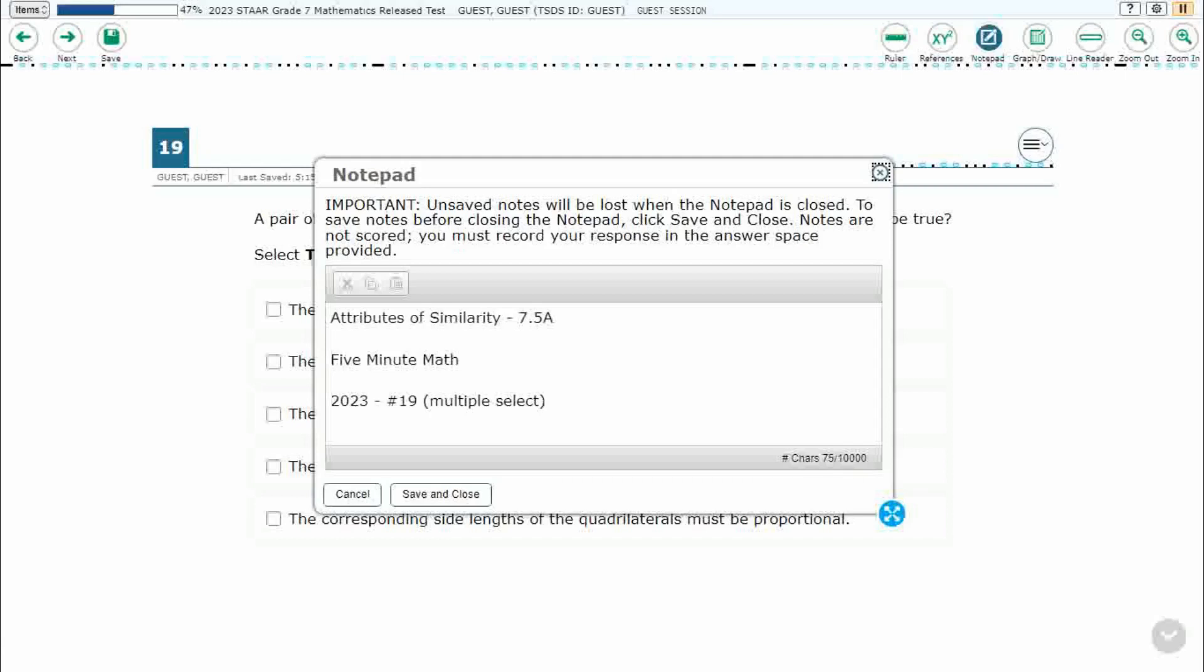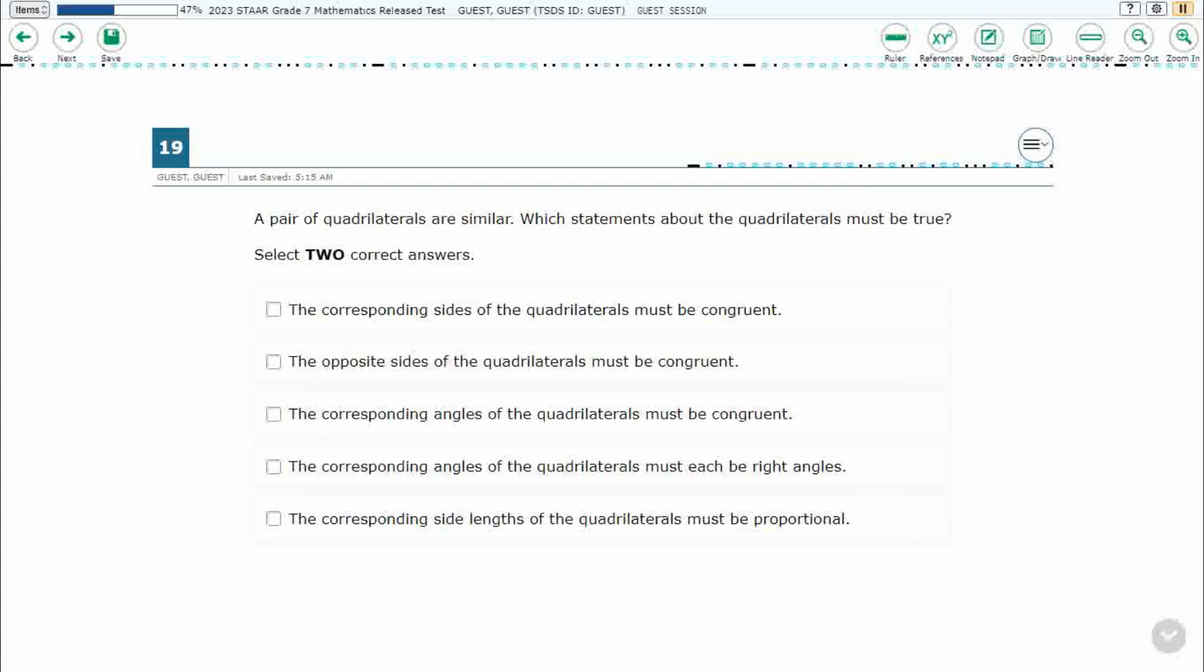Hello and welcome to 5-Minute Math. Today we are looking at the 7th grade concept of Attributes of Similarity. This is standard 7.5a in the great state of Texas, and we are using item number 19, which is a new item type called Multiple Select, of the 2023 released Star Test. If you haven't done so already, please go ahead and take a moment to pause the video, work this problem out on your own, unpause it, and we will look at our answers together.